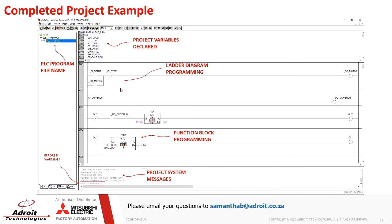In the programming field you can see ladder diagrams being used with the classical normally-open and normally-closed contacts as well as coils. You can also add functions in between such as timers, counters, scaling blocks, comparison blocks, and a wide range of predefined function blocks for your process. Below the project, system messages give you the status of your hardware as well as the condition of your program — the program must have zero errors prior to compiling and programming the GOC.